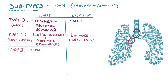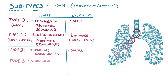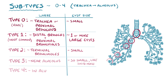Type 2s come from the terminal bronchioles and have smaller cysts. Type 3s arise almost all the way down to the alveolus and have cysts that are so small they look like a solid mass. Type 4s develop in the alveoli and have large cysts.